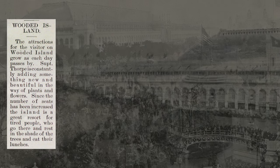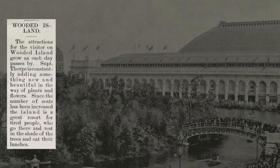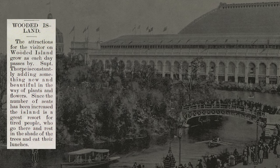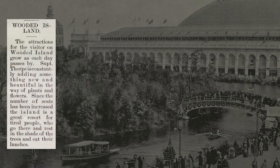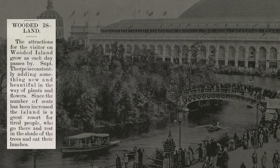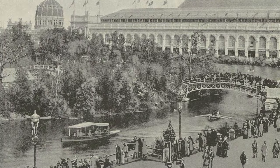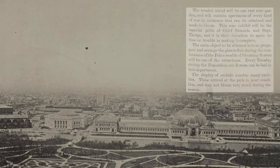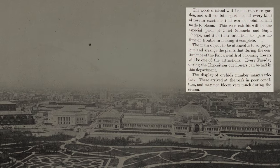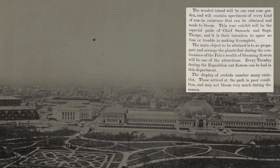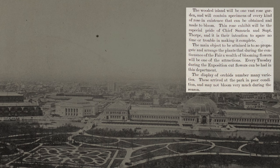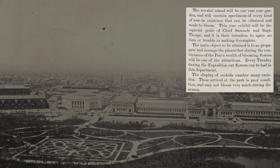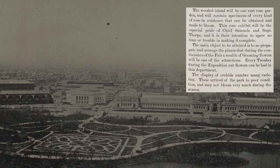On wooded island, Superintendent Thorpe is constantly adding something new and beautiful in the way of plants and flowers. Since the number of seats has been increased, the island is a great resort for tired people who rest in the shade of trees and eat their lunches. In addition to the many variations of plants, the wooded island will be one vast rose garden, containing specimens of every kind of rose in existence that can be obtained and made to bloom. This rose exhibit will be the special pride of Chief Samuels and Superintendent Thorpe, sparing no time or trouble to make it complete.